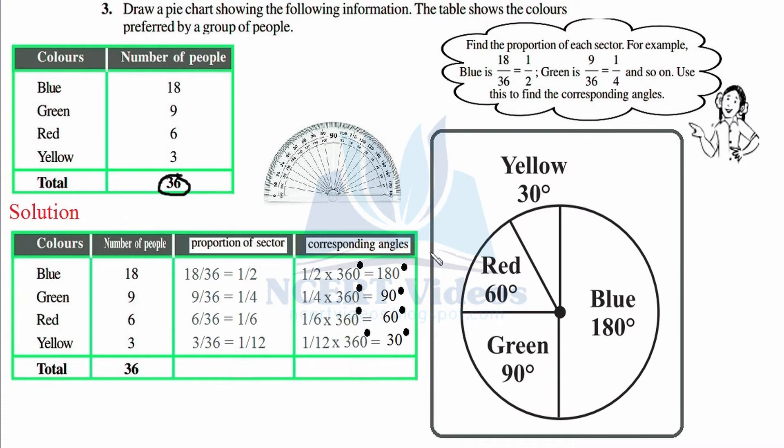We shall construct a table because in tabular representation it becomes easy to understand different sub-events. We copied two columns from the given question: colors and number of people. The vertical ones are columns and the horizontal ones are rows. The next column we add is 'proportion of sector.'